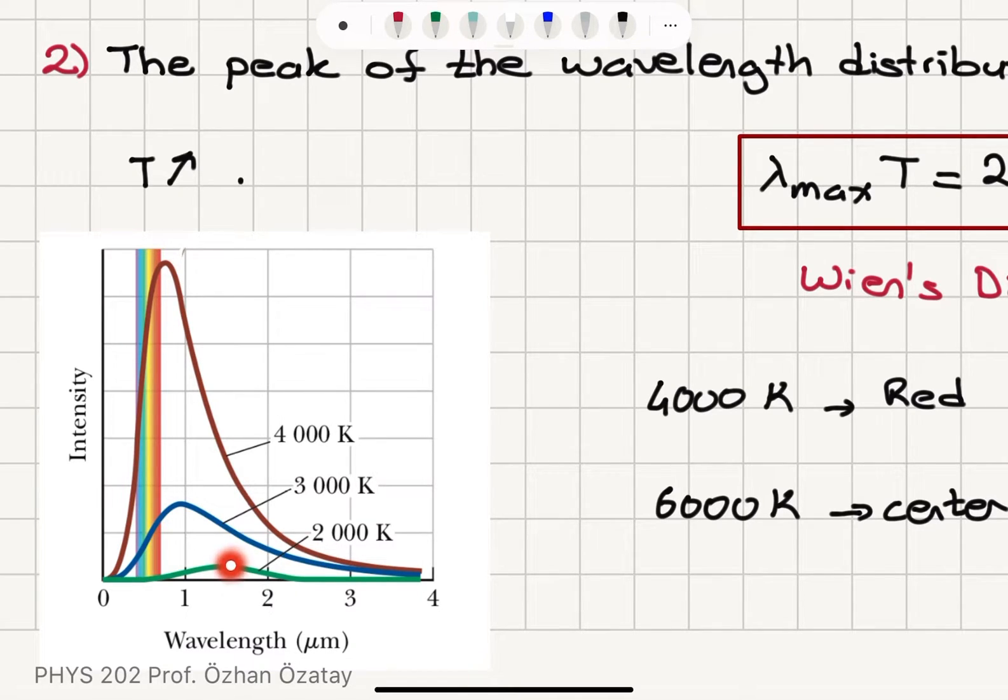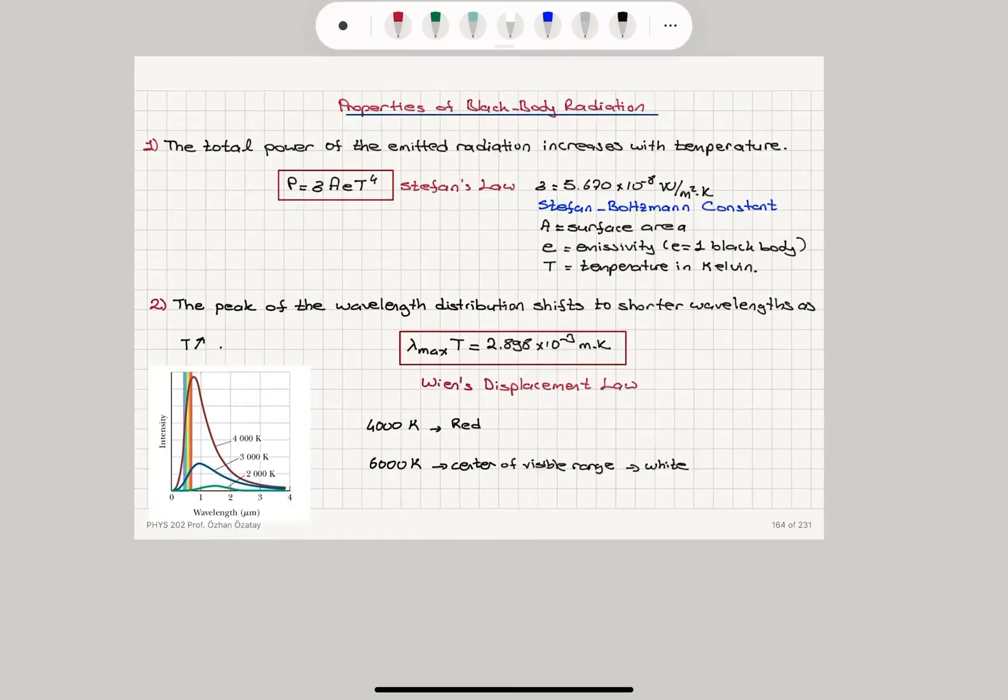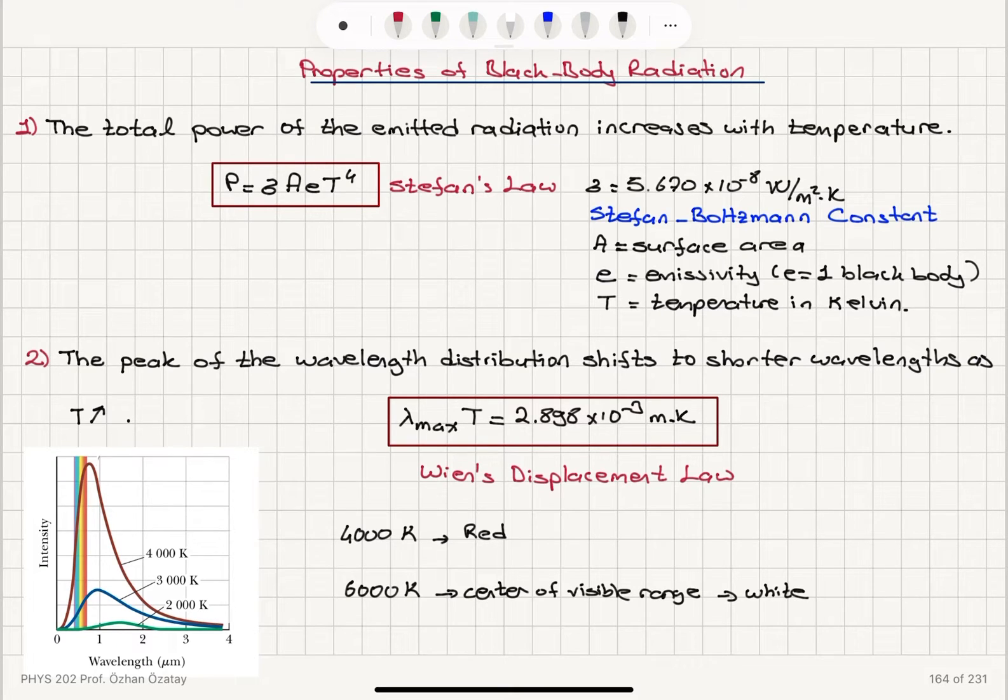You can see 2,000 Kelvin, the peak is around 1.5. 3,000 Kelvin, it's close to 1. 4,000 Kelvin, it's close to basically the red region. So it's almost in the visible range.